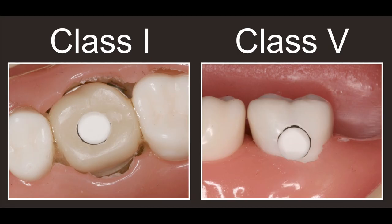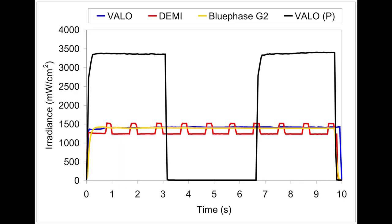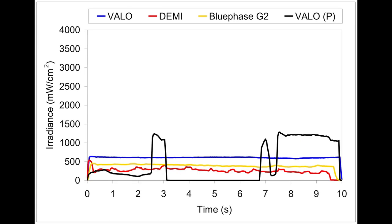Here we can see the location of the sensors described in the article. The sensor in the Class I location was 4 mm from the cusp tip and in the Class V location the sensor was 2 mm from the facial surface. One example shows an operator who used the curing light to its maximum potential, delivering a very uniform irradiance in the Class V location. By contrast, another operator was less steady and delivered a very non-uniform and low amount of energy to the Class V detector.